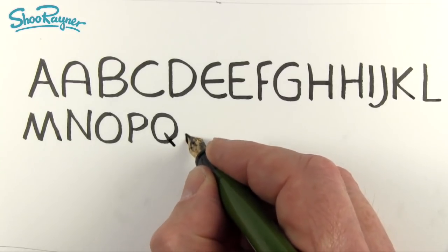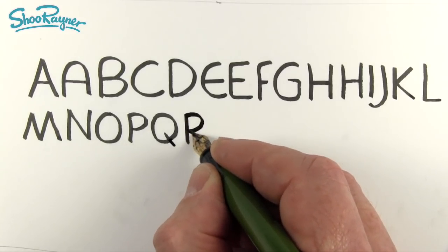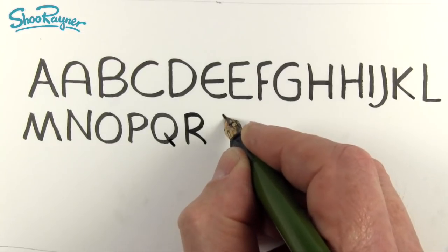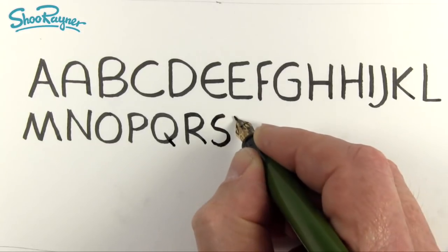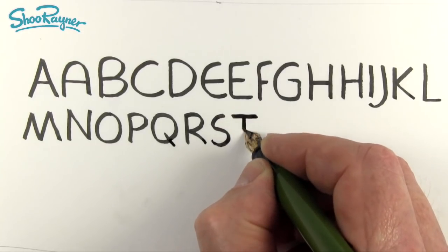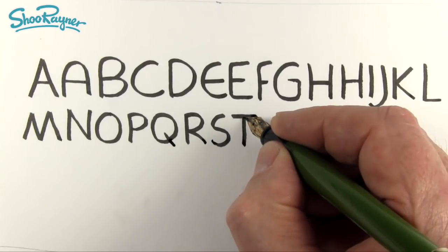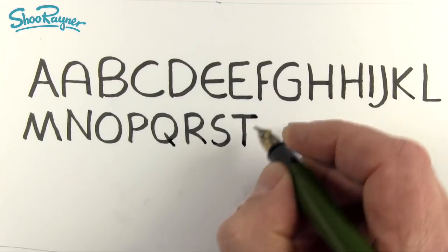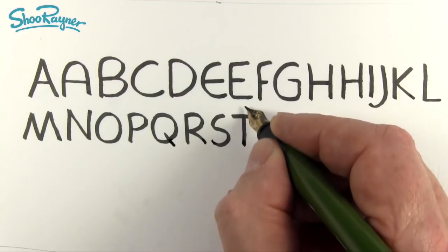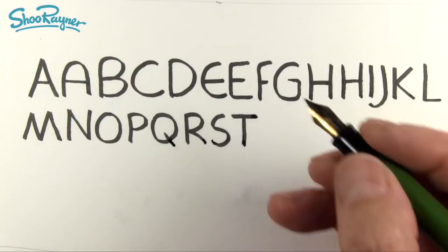R, again start at the bottom, up, around, and down. S, that's pretty obvious. T, I think I thought about this a lot. I think that is the most efficient because you're getting a straight line and then you're getting into that line and down.